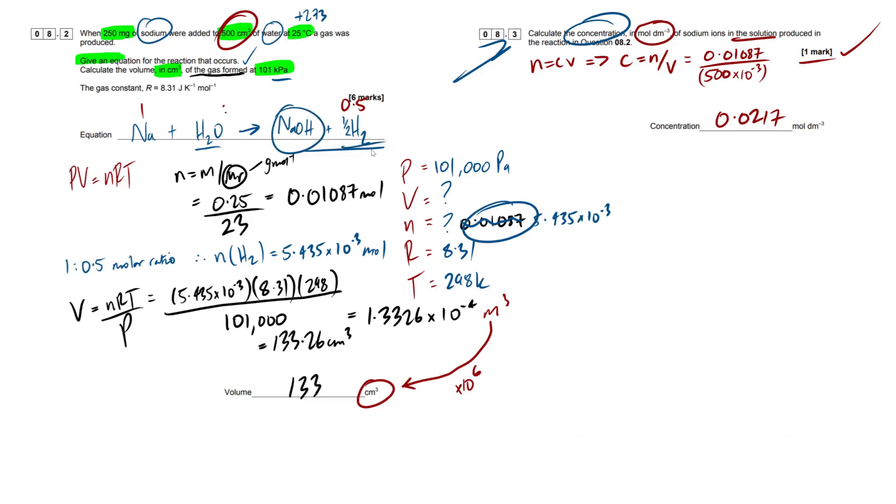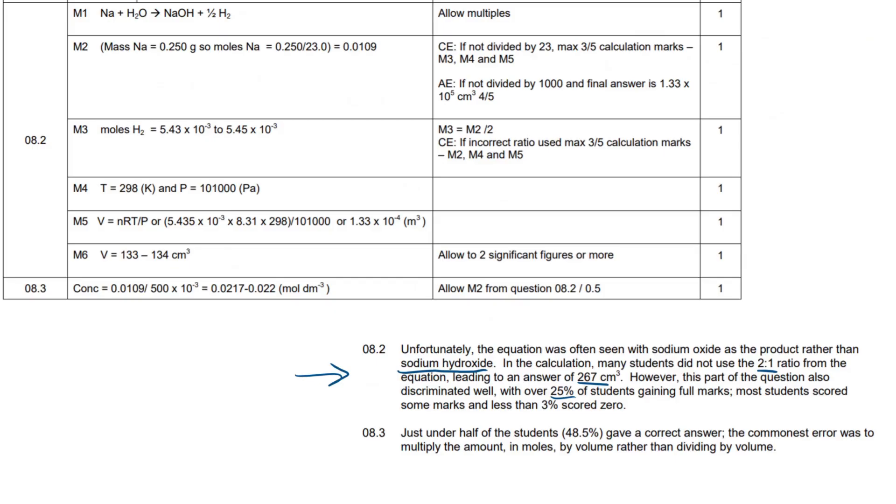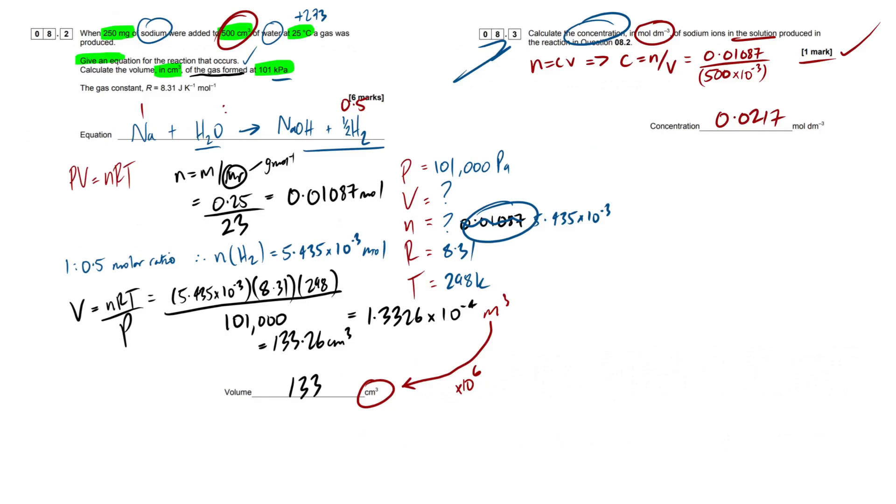As I said, most students scored some marks and less than 3% scored zero. So just take a note of when we're reacting a group 1 metal with water, we always produce a hydroxide and a hydrogen gas. So just trying to remember that caveat there. Next up, what did they say? The 2 to 1 ratio. So it's really, really important that when we look at the moles which are reacting, we do them in the according ratios. So if you've written out an equation here and you worked out the moles of one thing, which in this case was our sodium because that was the variables given, we have to go back then and look at the molar ratios based on the coefficients and then times or divide the moles as needed.